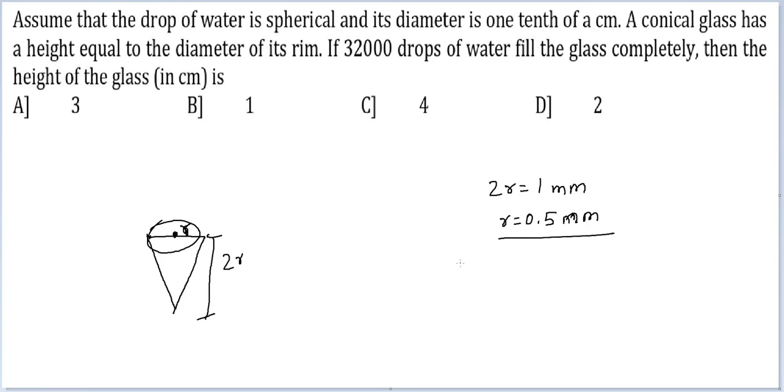So for 3200 drops is 3200 into 4 by 3 pi r cubed. So half, so 1 by 8. Okay. This volume is equal to 1 by 3 pi r squared.